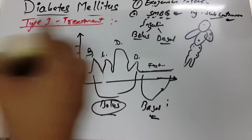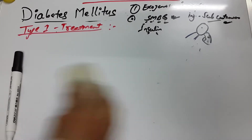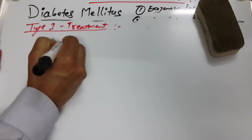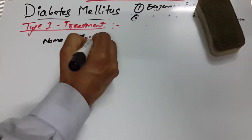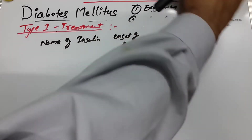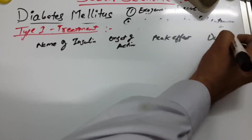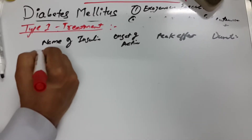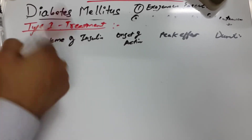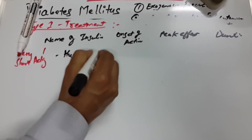Now let me write the types of insulins and their actions. The table columns are: name of insulin, onset of action, peak effect, and duration. The first category is very short-acting insulin — examples in the market are Humalog and Novolog.